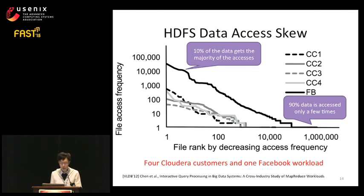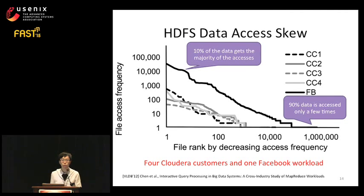We start by looking at workload data access skew. We have five workloads—four from Cloudera customers and one Facebook workload. The X axis is the file ranked by decreasing access frequency; the Y axis is the file access frequency, both in log scale. As we can see, only 10% of the data gets the majority of the accesses, and 90% of the data is cold, accessed only a few times.